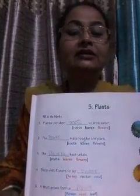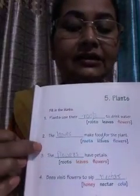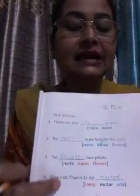Clear? Now the third one: The dash have petals. Which part of our plant has petals? The flowers. Roots don't have petals, but flowers have petals. So here in the third blank you will write flowers. The sentence is: The flowers have petals.